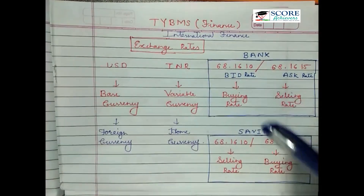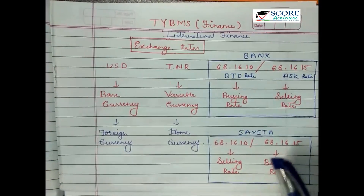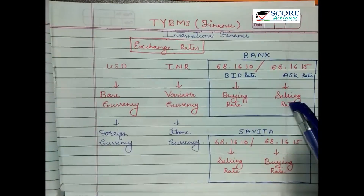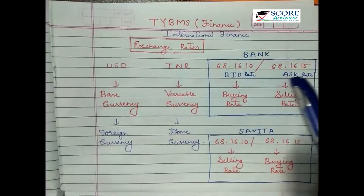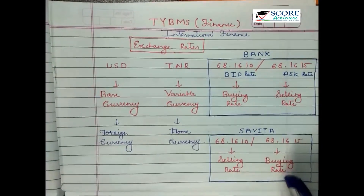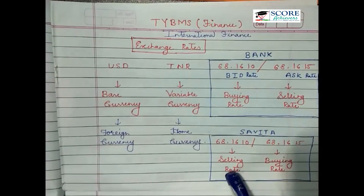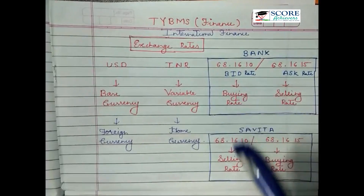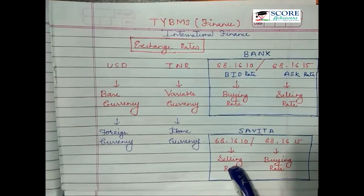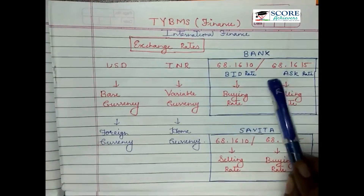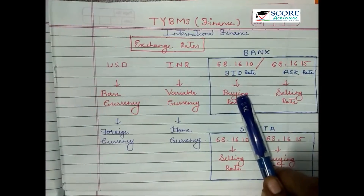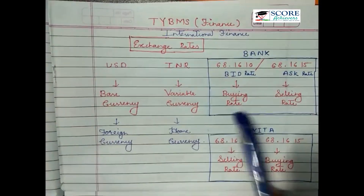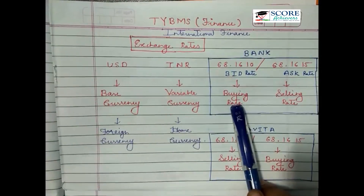I am planning to go on a world tour in the coming vacation, so I require US dollars. I will purchase them from the bank, so the bank's selling rate of 68.1615 will be the buying rate for me. After the tour, suppose I still have a few US dollars — I have to return them to the bank, so the bank's buying rate becomes my selling rate. So for the world tour I am going to buy US dollars at 68.1615 and sell US dollars to the bank at 68.1610.